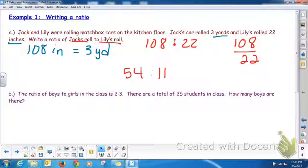So let's look at another example. The ratio of boys to girls in the class is two to three. If there are a total of 25 students in class, how many boys are there? Well, the ratio doesn't mean that there are two boys and three girls. It means the ratio for every two boys, there are three girls. So in order for us to find out,